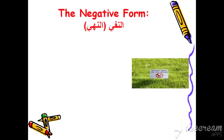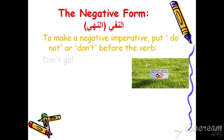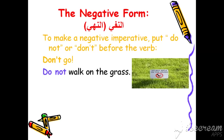The negative form — اللي بنسميه النهي — إني بدي أنهاك عن إشي. With the negative form we use 'don't' or 'do not'. We don't use 'doesn't' or 'does not'. بس بستخدم ببداية الجملة don't أو do not. For example: 'Don't go', 'Don't walk on the grass' — يعني ما تمشي على العشب.